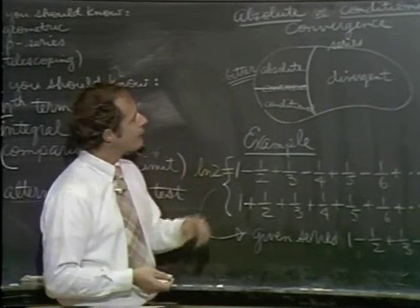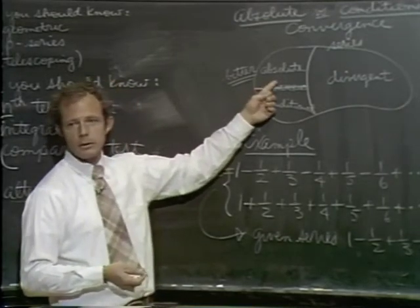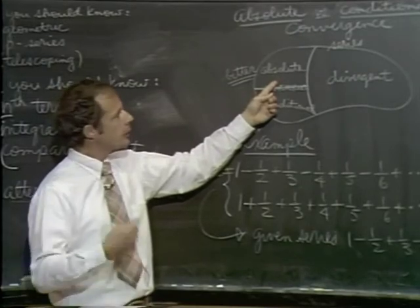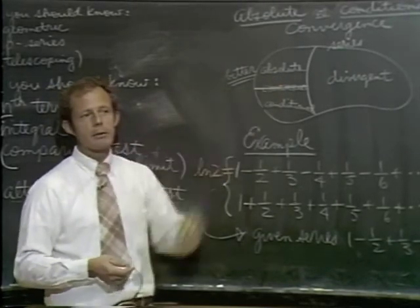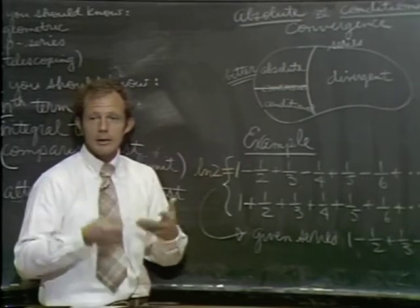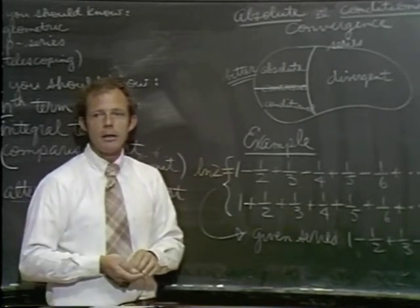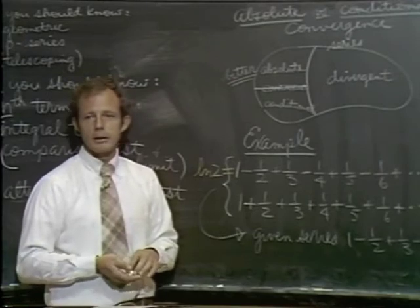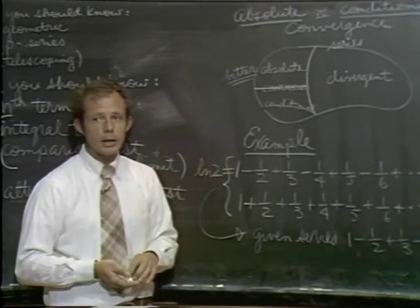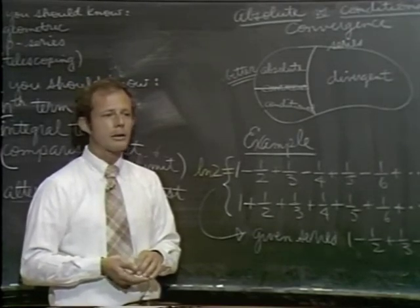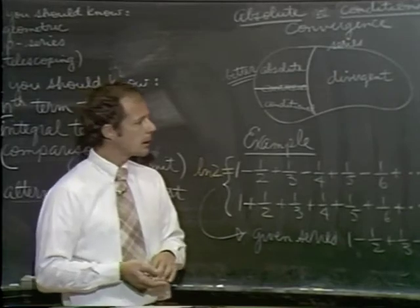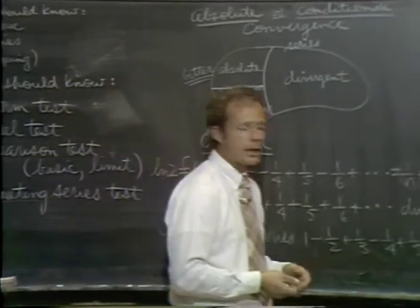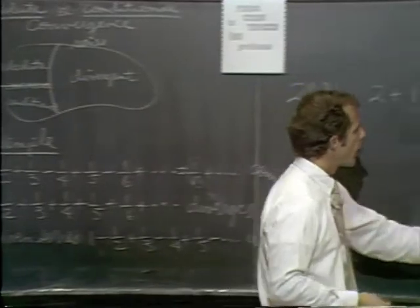That turns out not to be the case for absolute convergence. If you take an absolutely convergent series, you can rearrange it and put parentheses in, and that will not change the value of the series. You'll always get the same result back. So why do we care about absolute convergence? Because that's a very nice property to have.